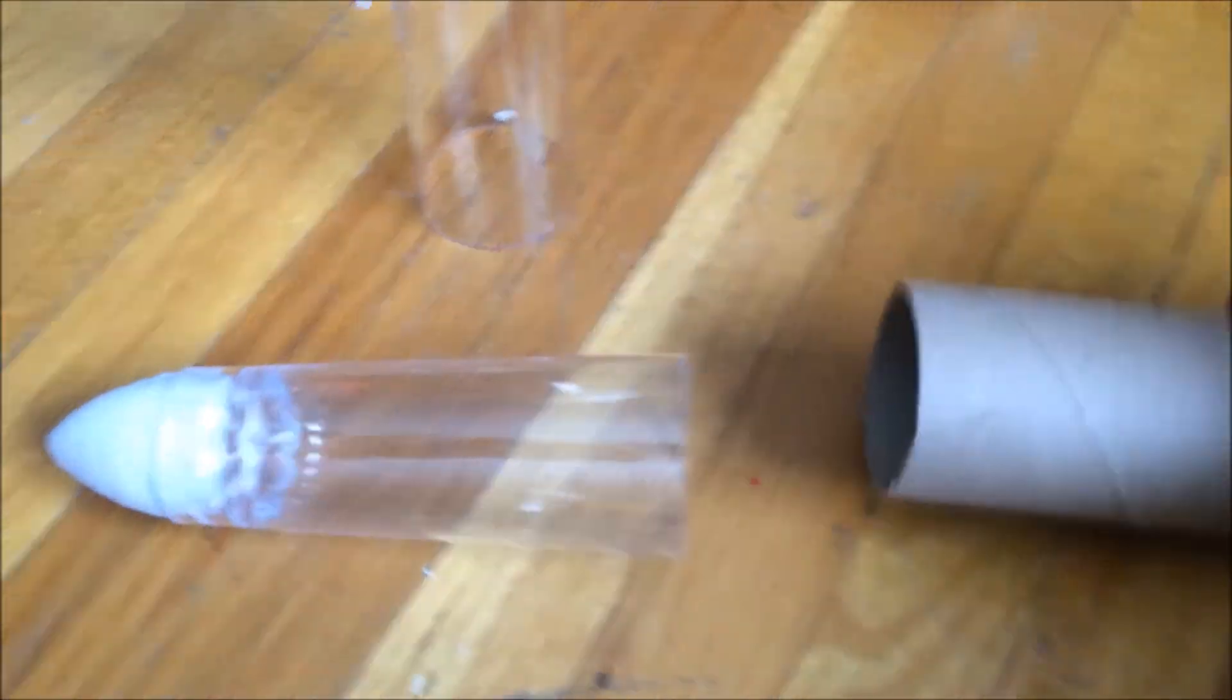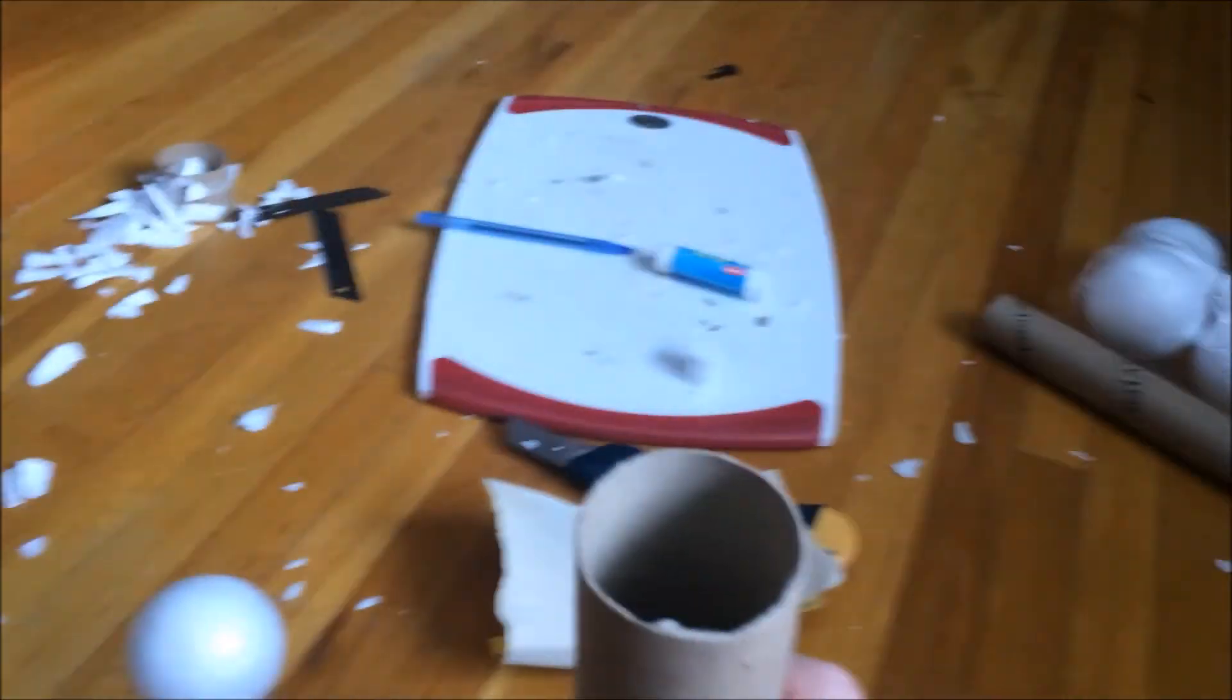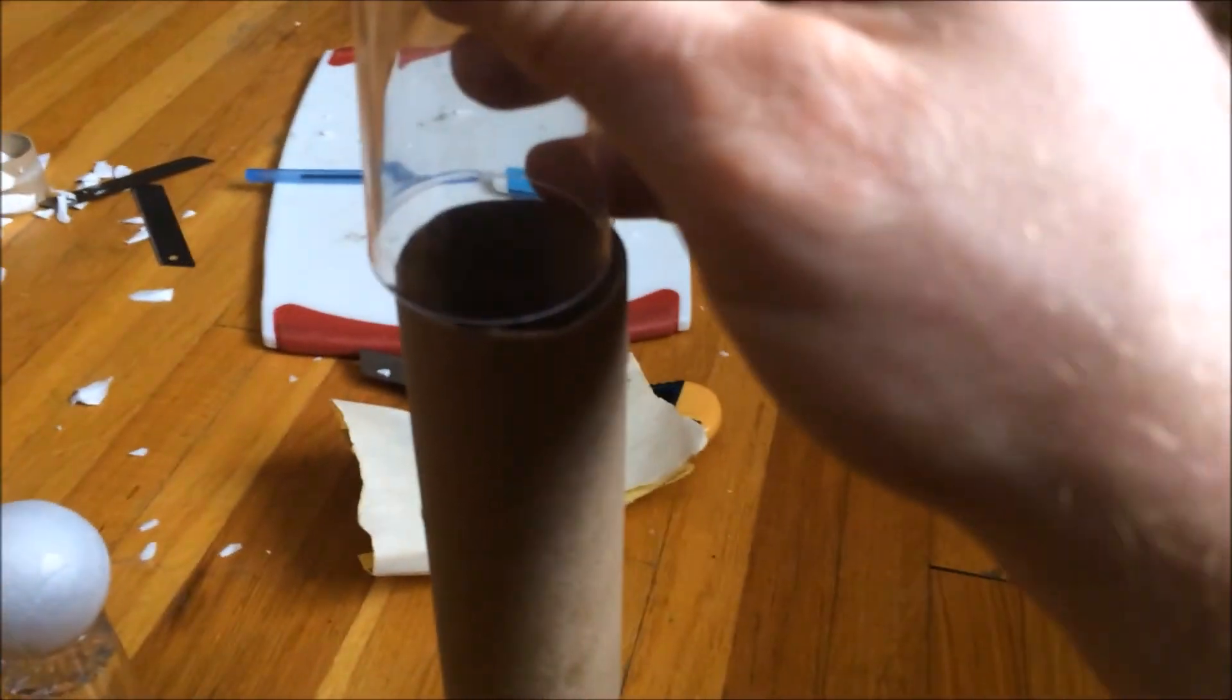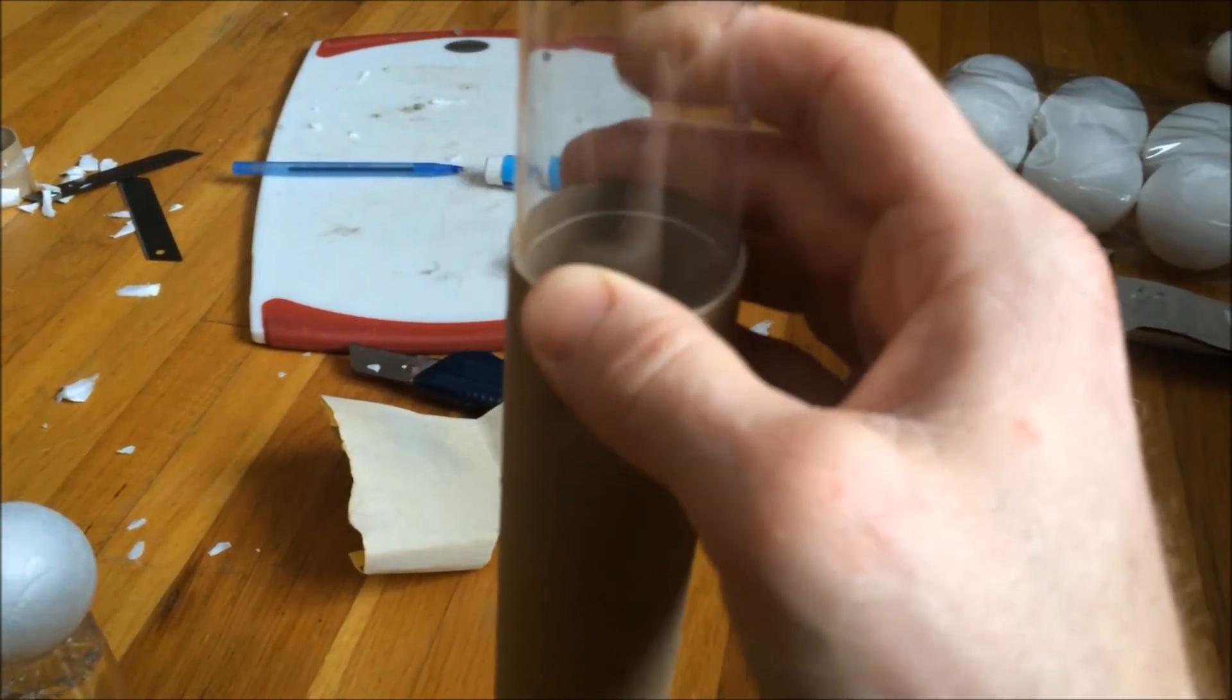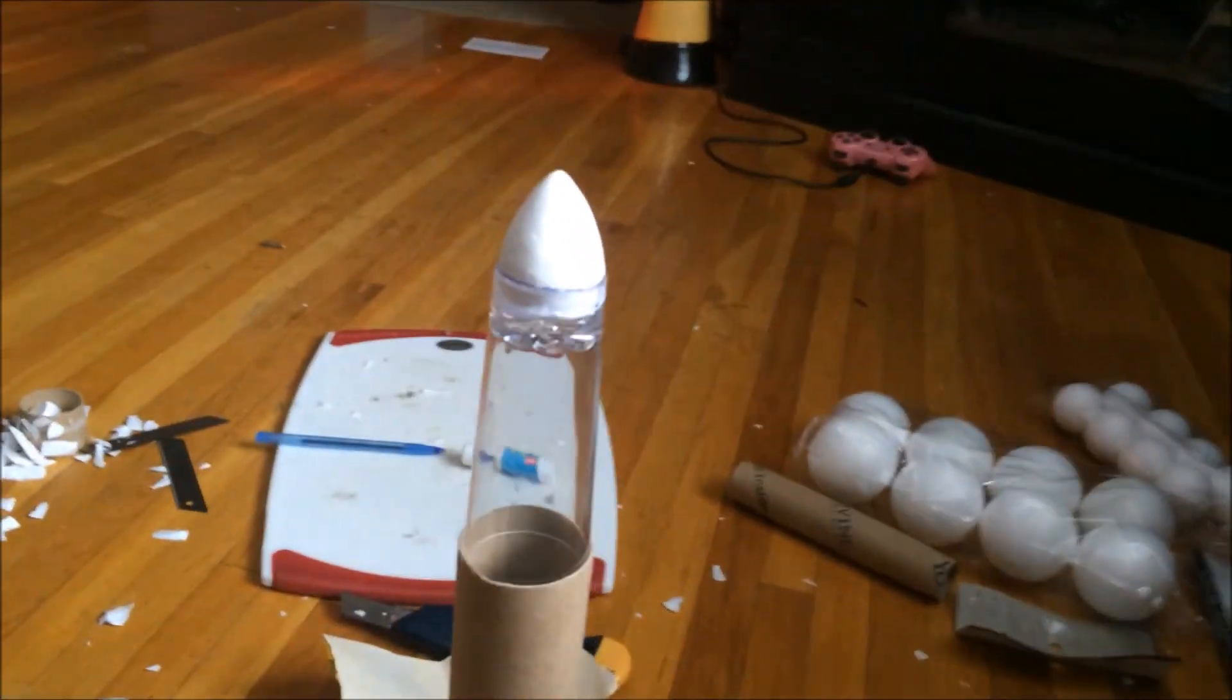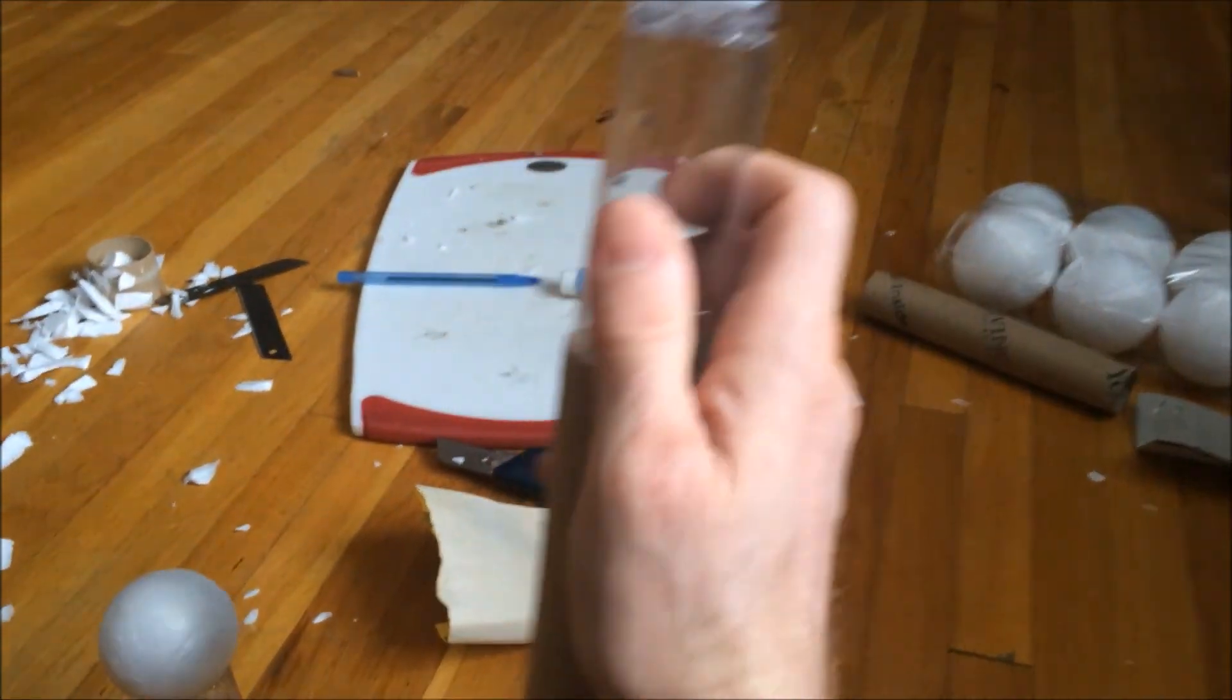And for paper towel tubes it fits, basically it's the exact same size, so you could either put a stop on the inside and shove this in there a little bit. There you go, look at that, it's nicely in there. So there's an idea for a nose cone.